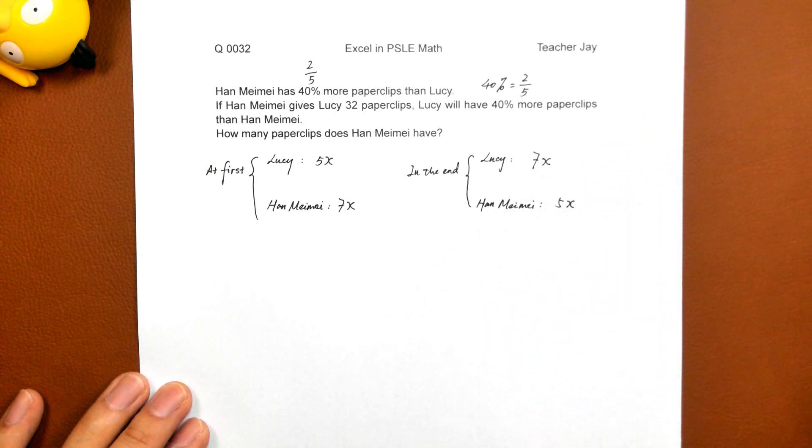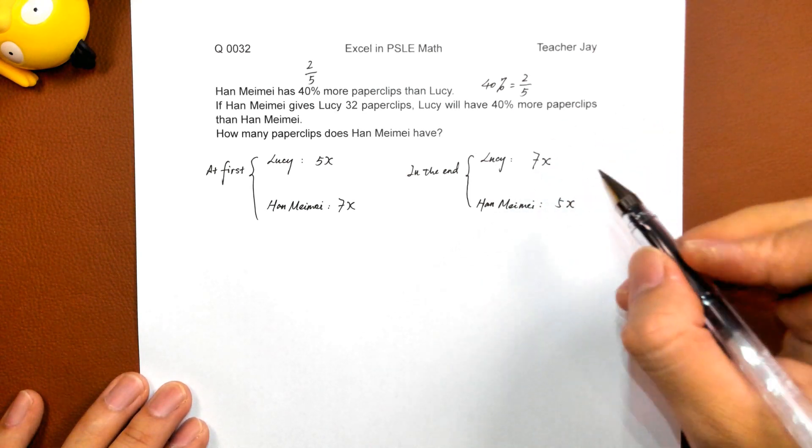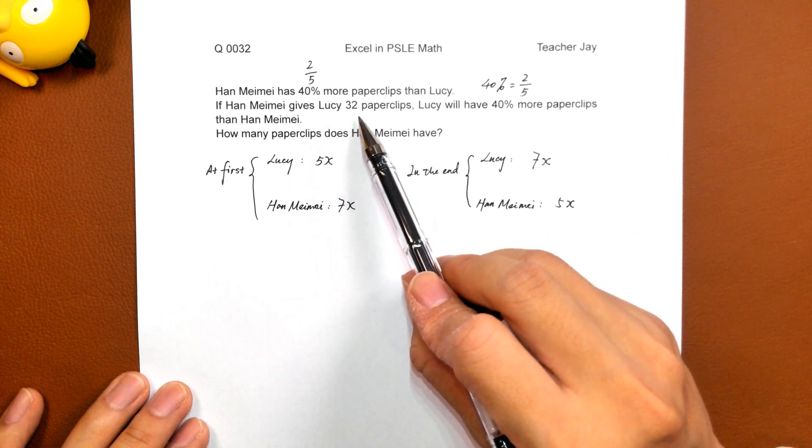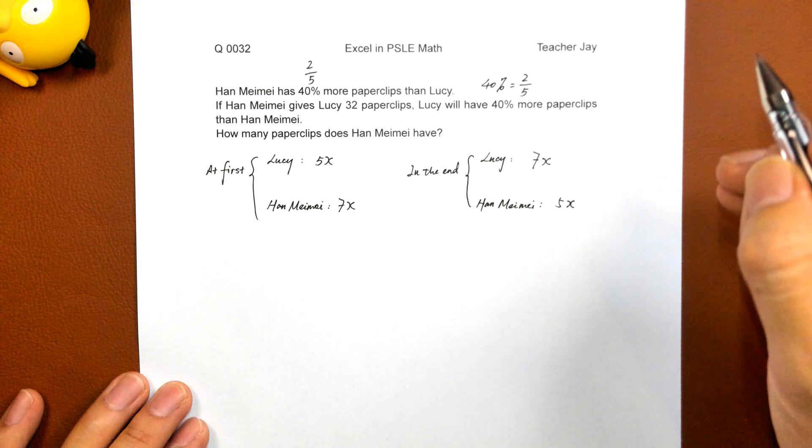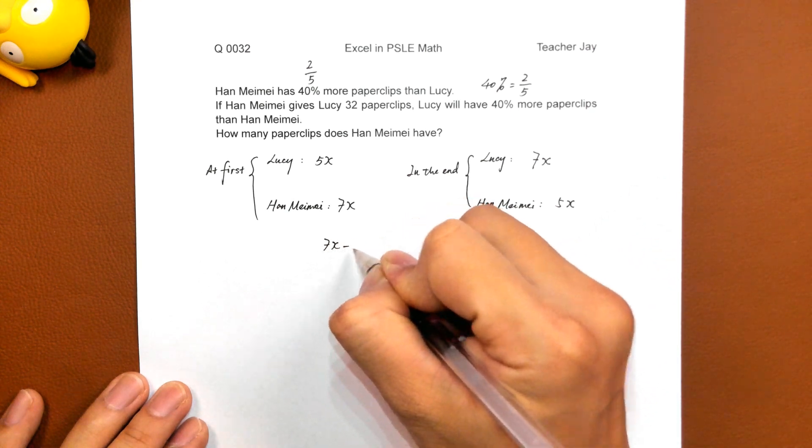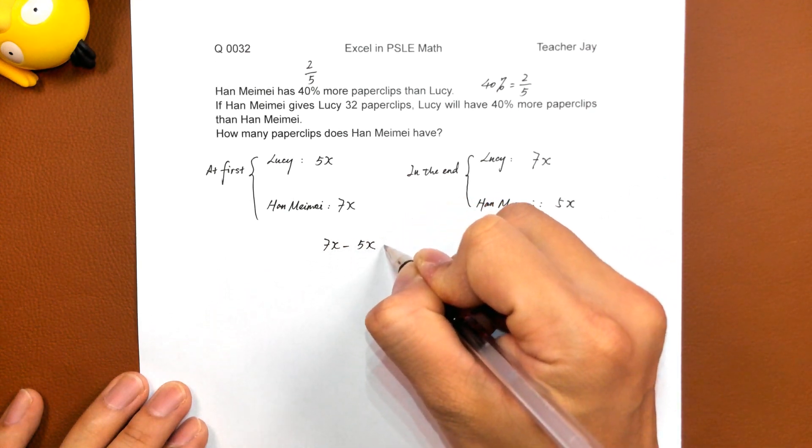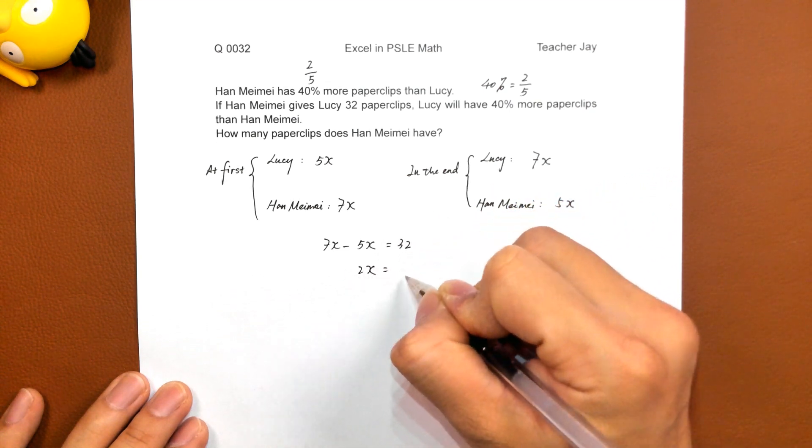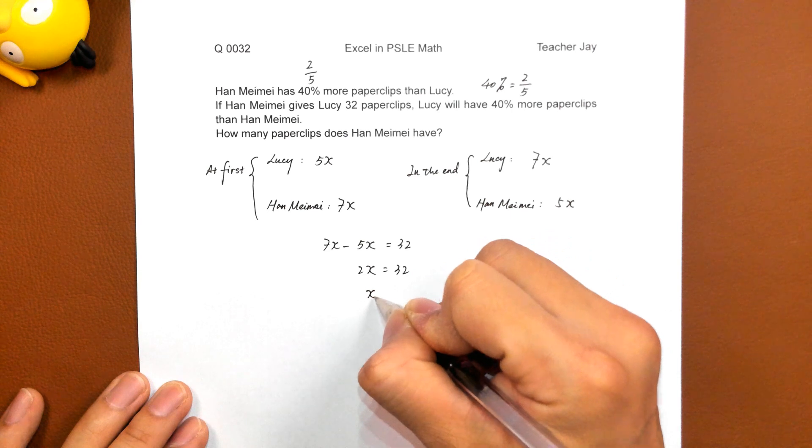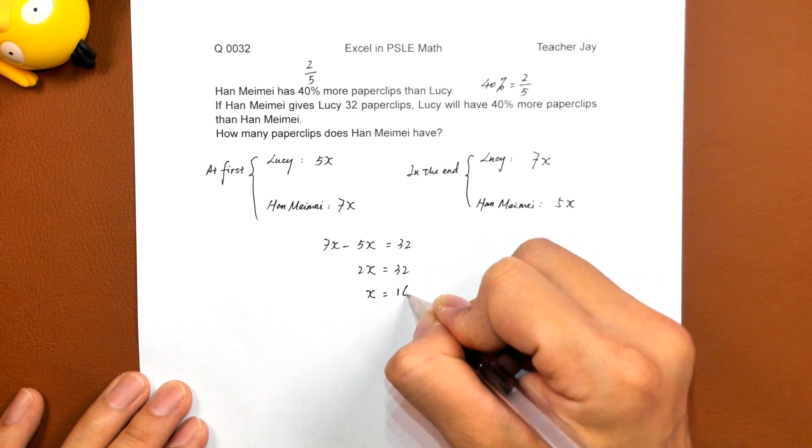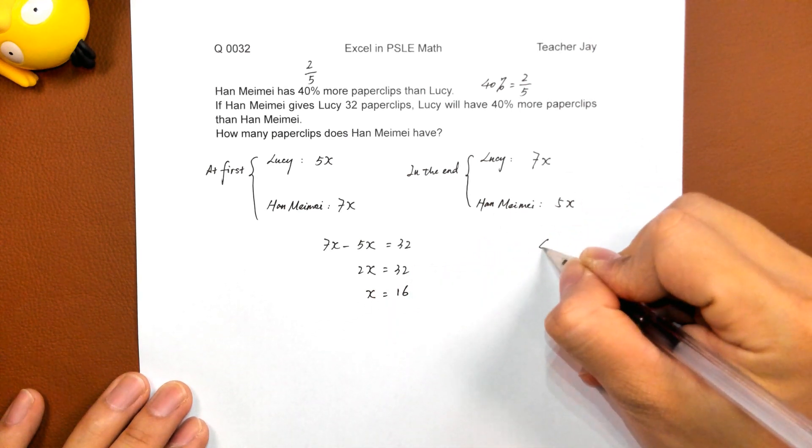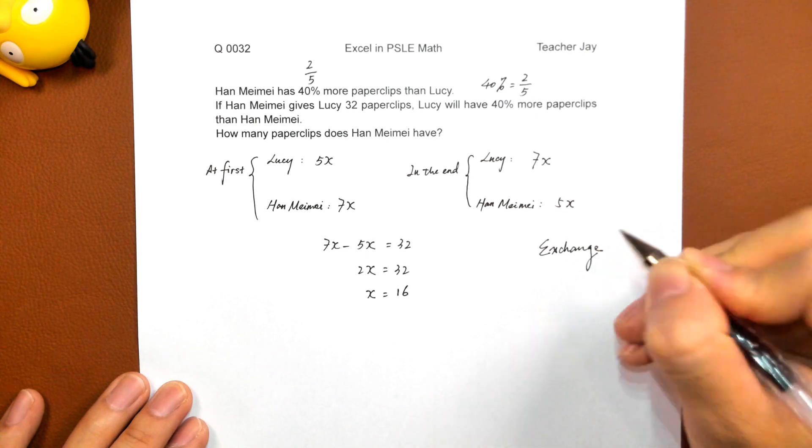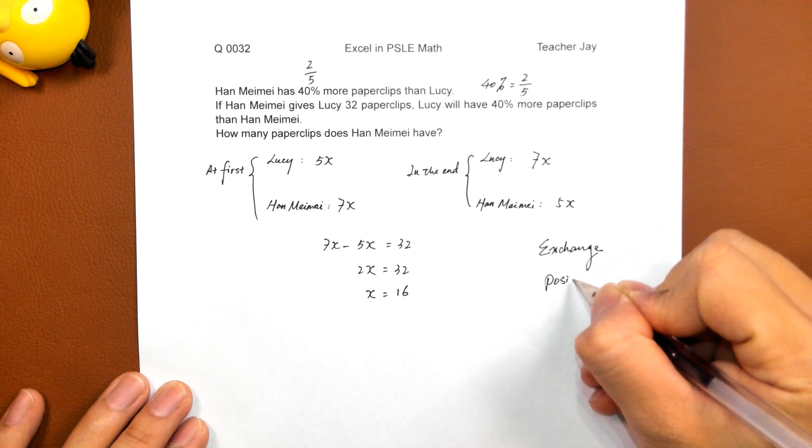What happened? That is because Han Mei Mei gives Lucy 32 paper clips. That means 7x minus 5x equals 32. 2x equals 32. x equals 16. This is so called exchange position.